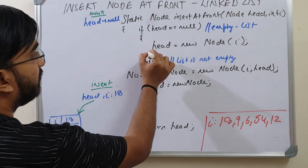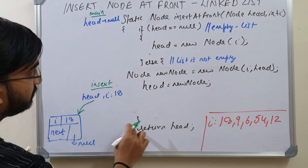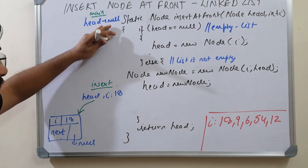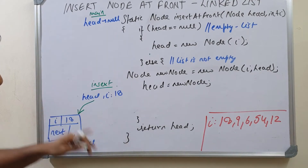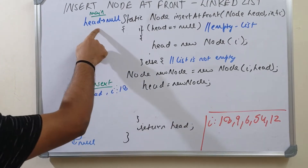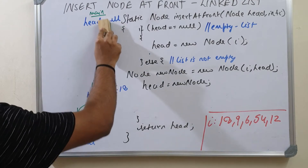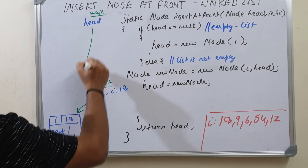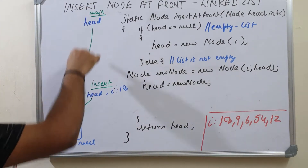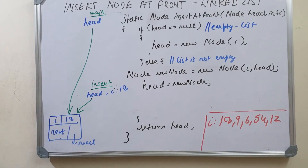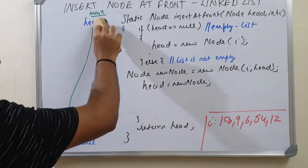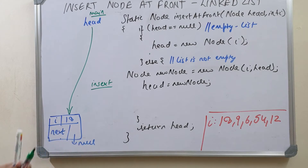We return this head because head in main is still pointing to null, while head in insert points to the new location. When we return, the head in main also points to that new location. If we were not returning the head, main's head would keep pointing to null. So after returning, the new head in main points to the node with i equal to 18 and next equal to null.